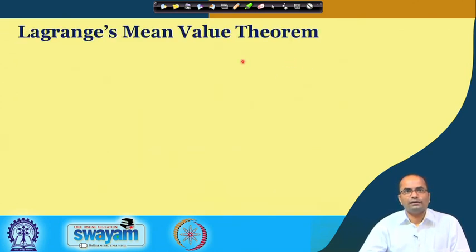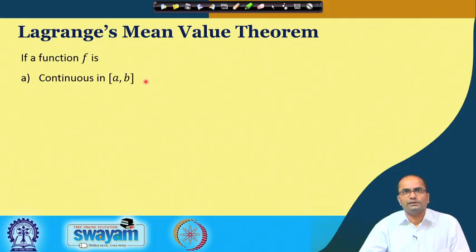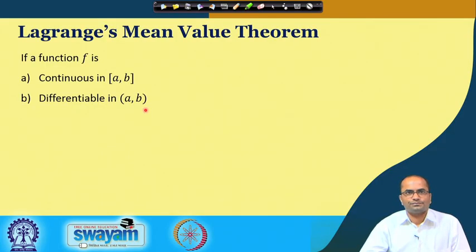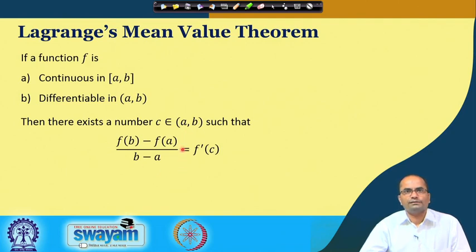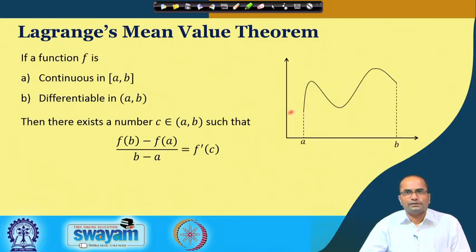Coming to the Lagrange Mean Value Theorem: the function is continuous and differentiable in the open interval, similar to Rolle's theorem, but the third condition requiring equal function values at the two endpoints is not required here. It is more general and less restrictive. There exists at least one number c in the open interval such that [f(b) - f(a)] / (b - a) equals f'(c).